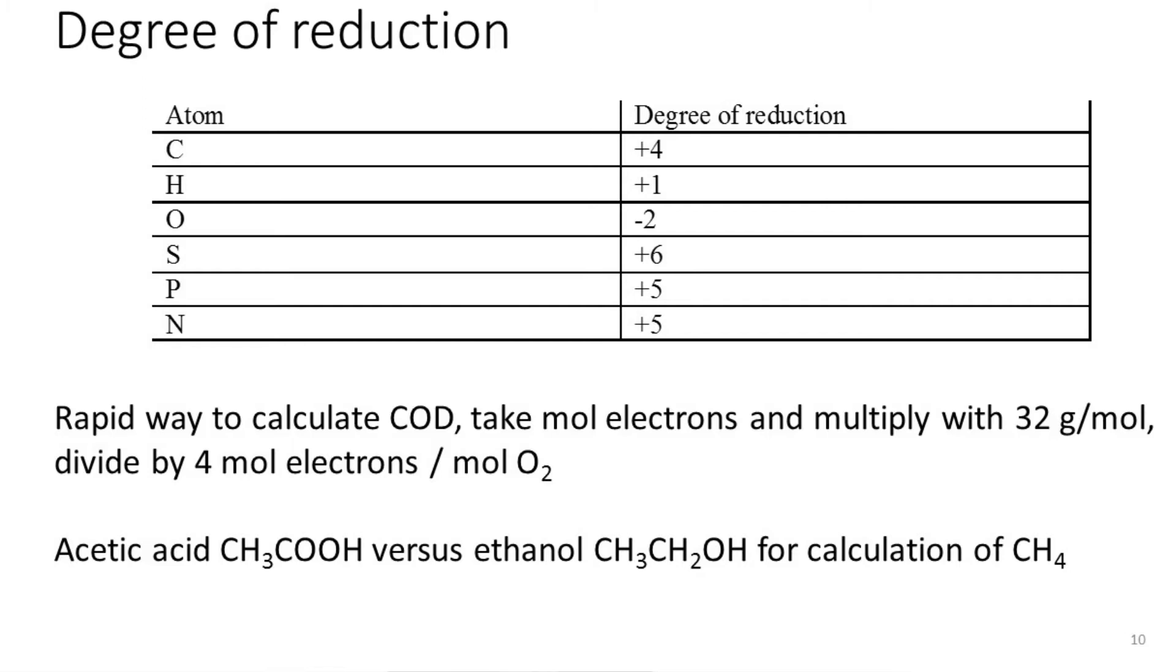If you want to calculate from a molecule then the COD, you're going to take this molecule, you calculate the amount of electrons that is in the molecules, you multiply it with 32 grams per mole, oxygen, COD, and you divide it by 4, because we need 4 electrons to make a mole of oxygen. Let's now compare towards methane production, acetic acid, and ethanol based on a degree of reduction. Important here is, remember, it's a theoretical production. In practice, you will have different numbers because there's also a growth yield.